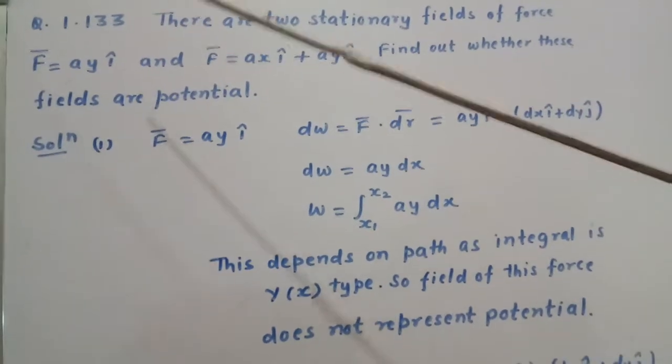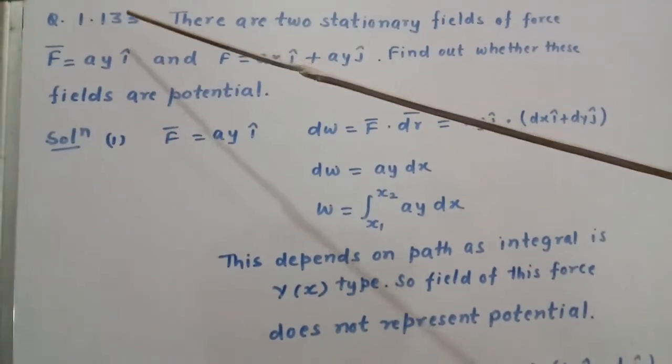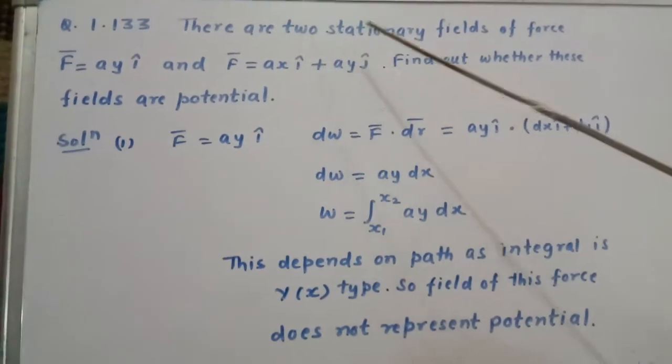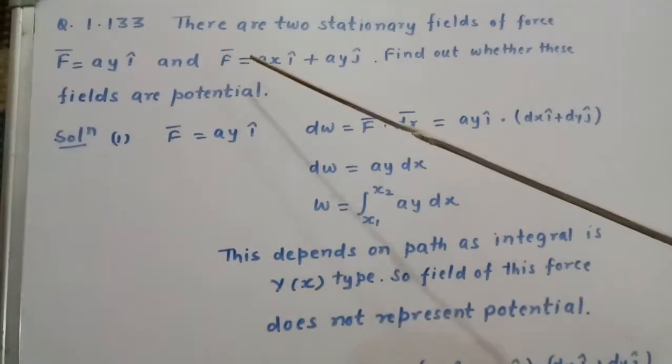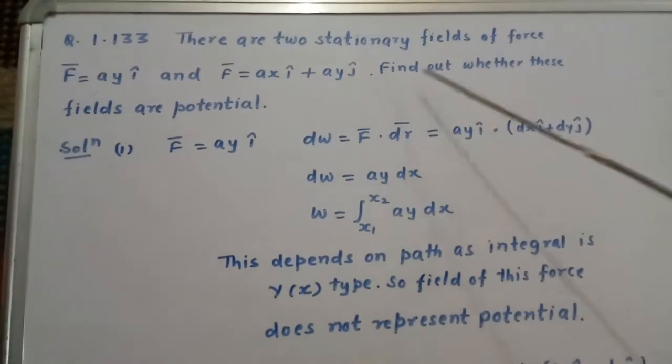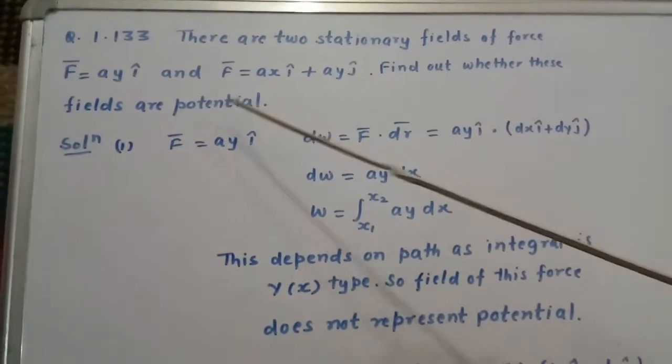Friends, this is our question from IIT JEE. We are going to study question number 1.133. There are two stationary fields of force: F = ay i cap and F = ax i cap plus ay j cap. Find out whether these fields are potential.